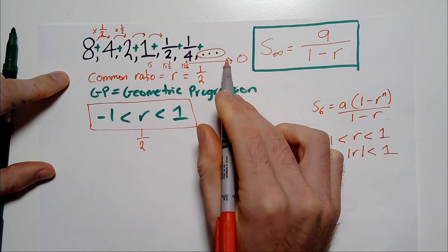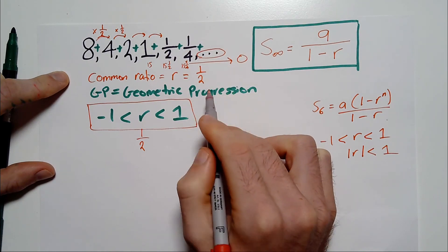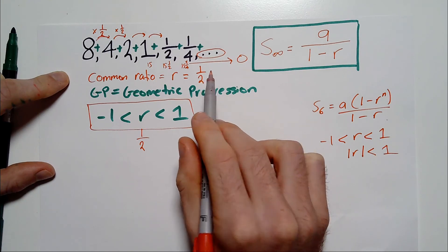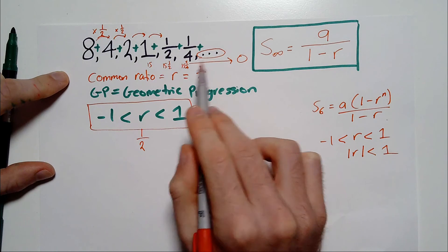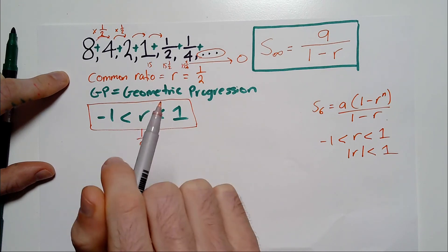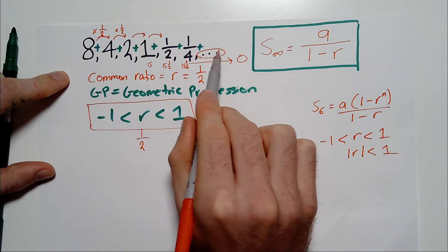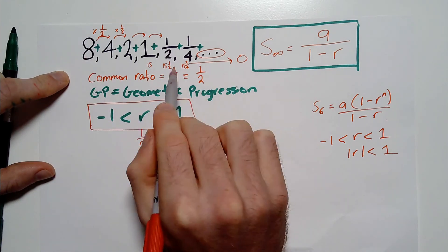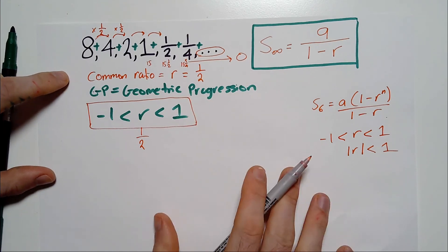If we were then to add 1 eighth, we would be at 15 and 7 eighths. But we're never going to get to 16 because the number you're then adding is never going to be as big as the previous one. So if you're at 15 and 7 eighths, you would need 1 more eighth to be added. But that's not going to happen because the next number is going to be half of an eighth, which is a 16th. So we can see intuitively here that this sum, if we keep adding the numbers on, we're getting closer and closer to 16.